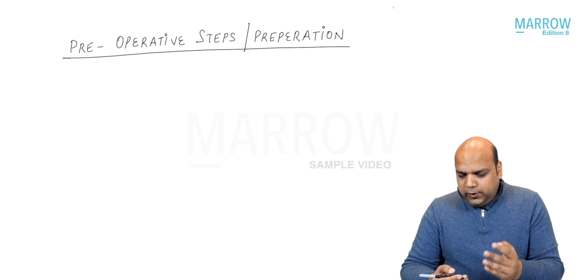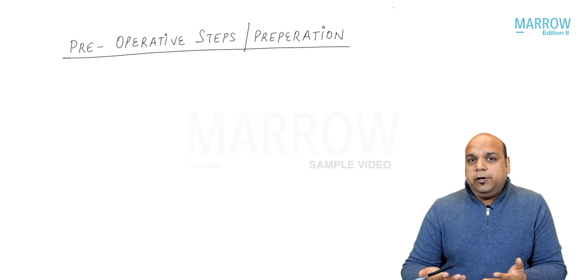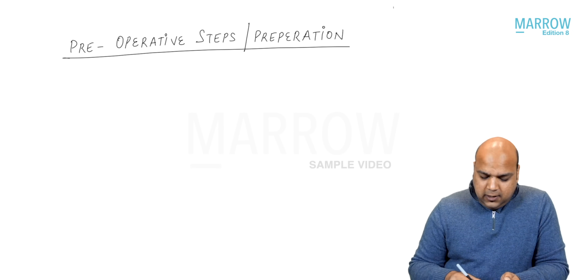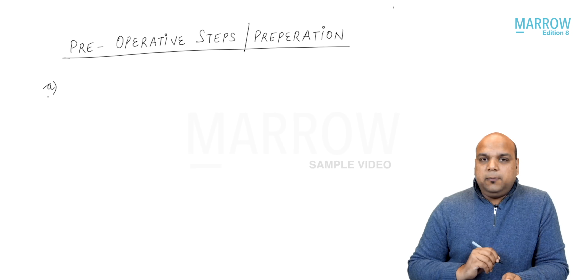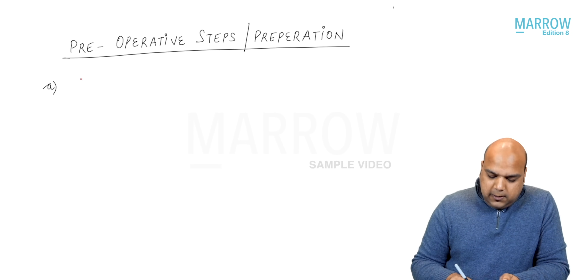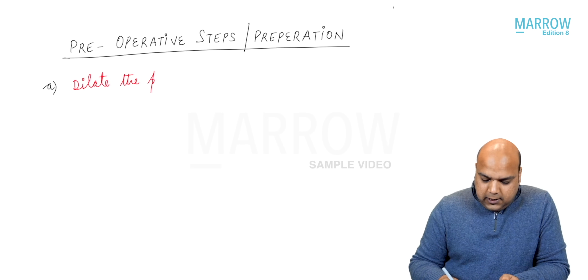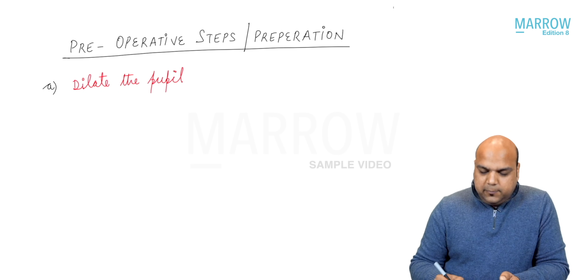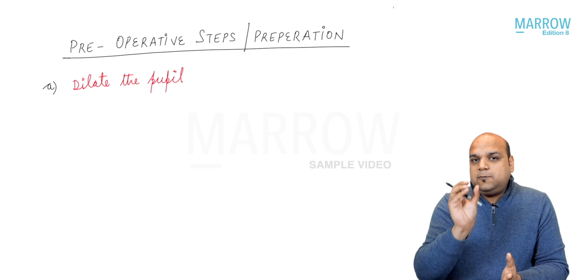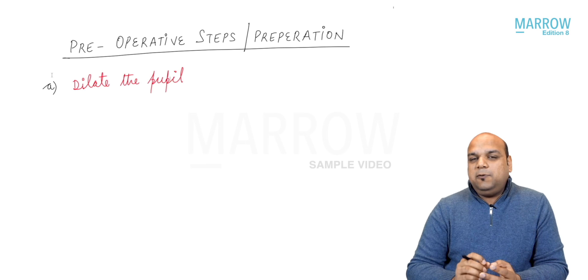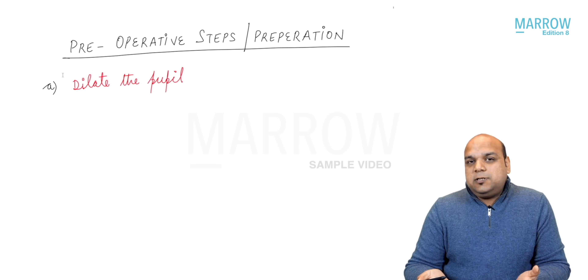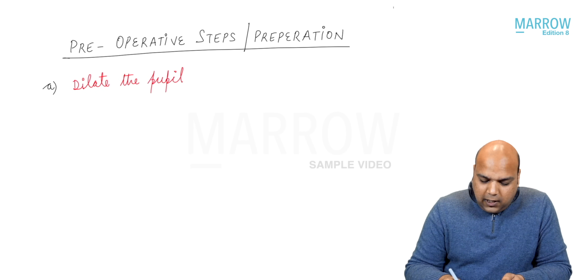How to prepare a patient for surgery — the pre-operative steps for cataract surgery or phacoemulsification. Number one, you need to dilate the pupil. If the pupil is constricted, your view of the lens is very small — you can only see a very small central 3 mm of the lens, so surgery will not be possible through that.